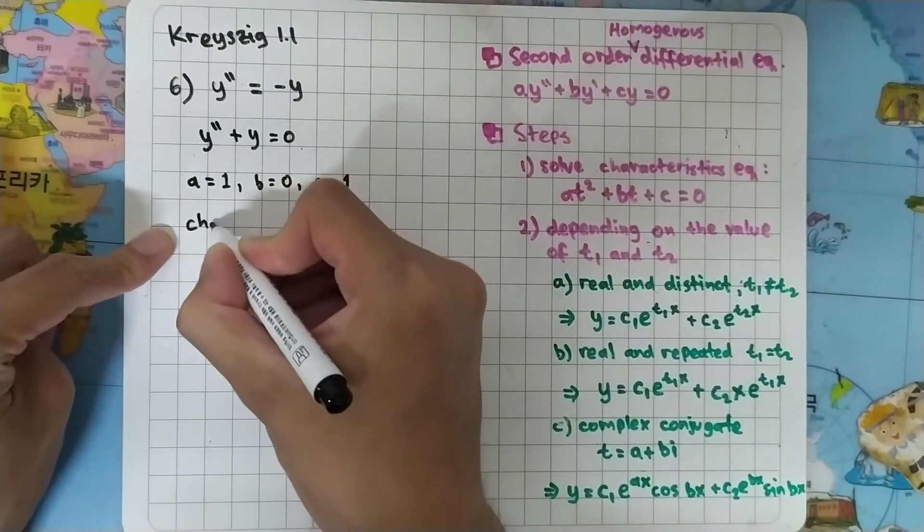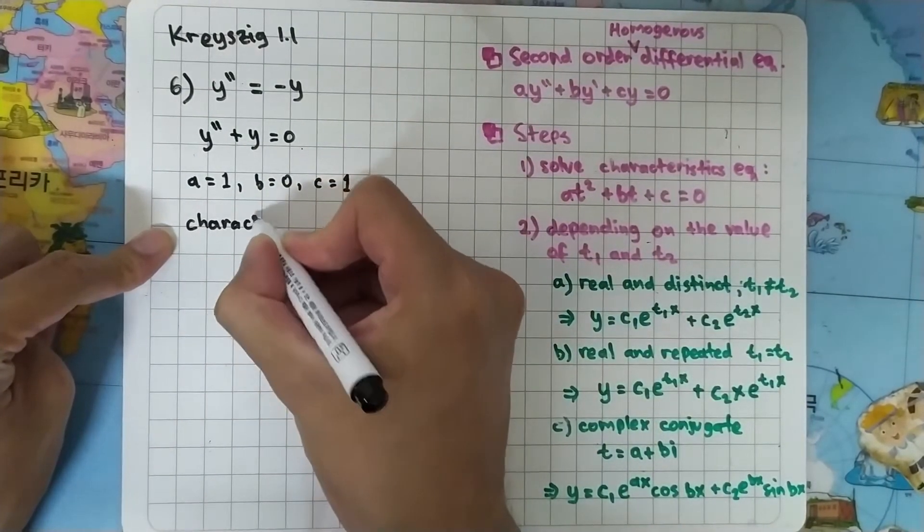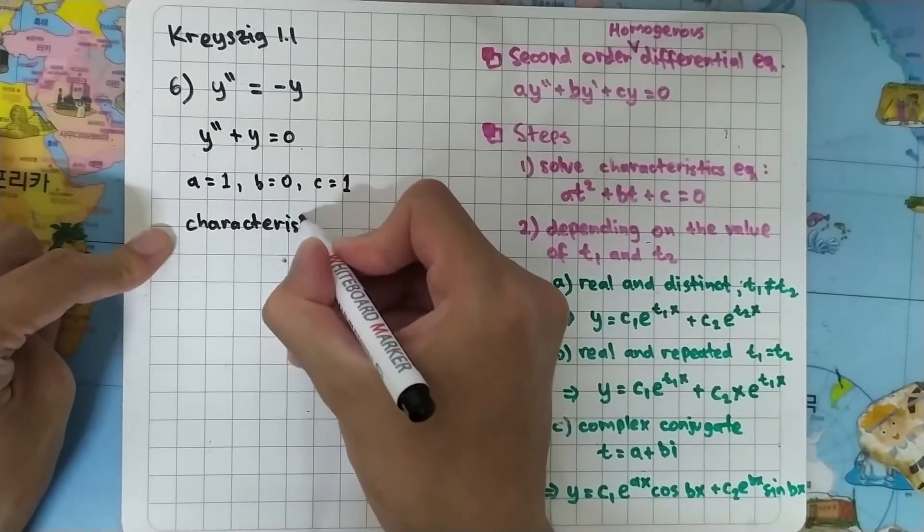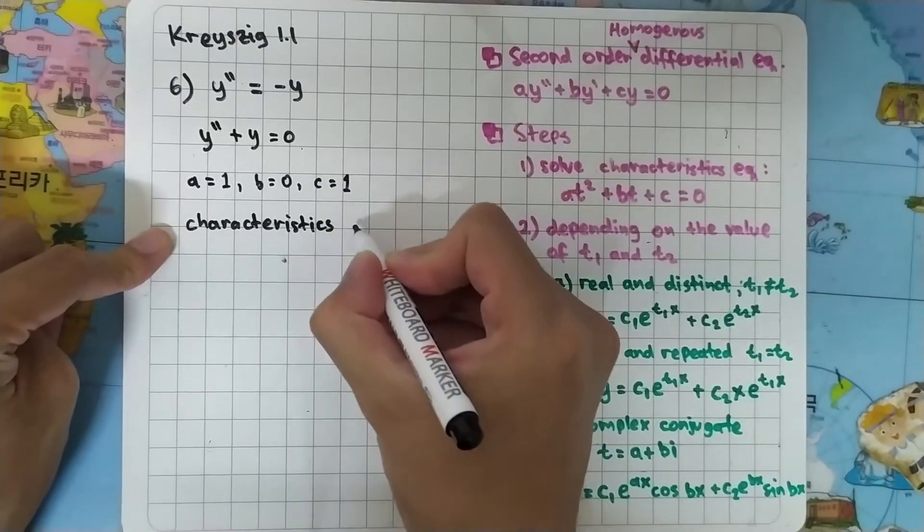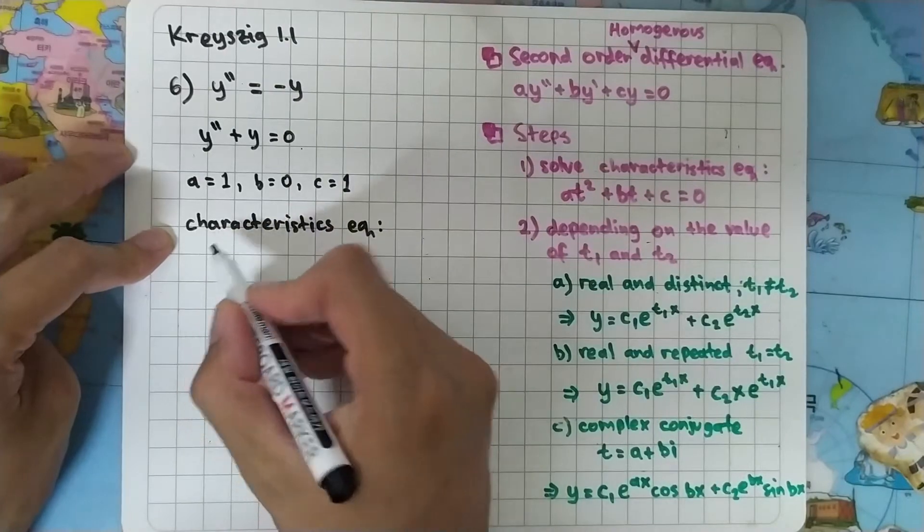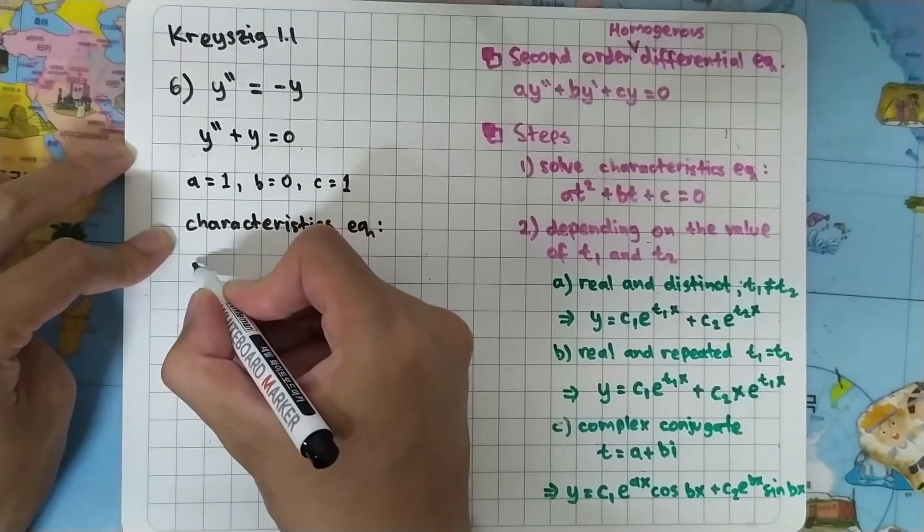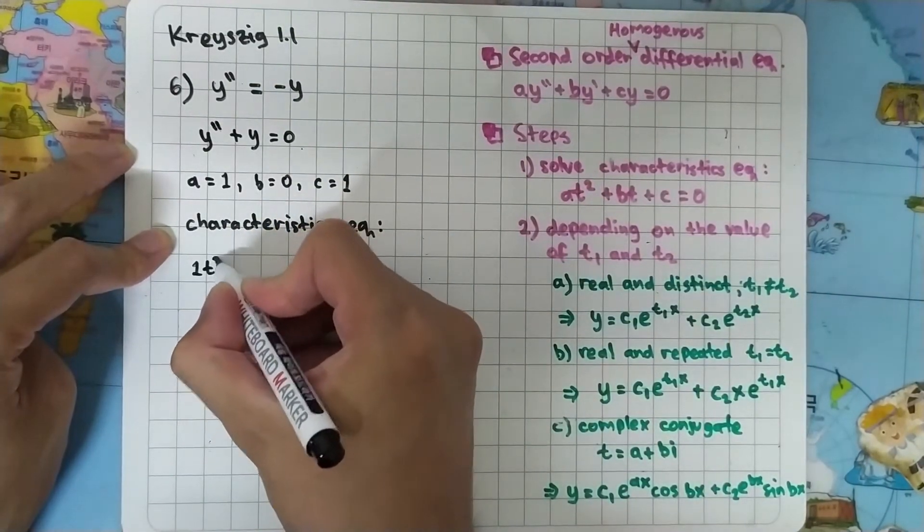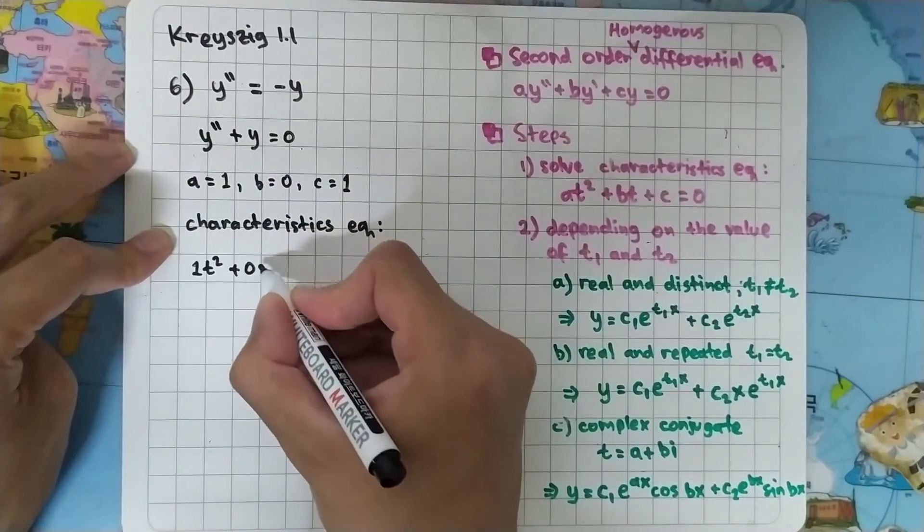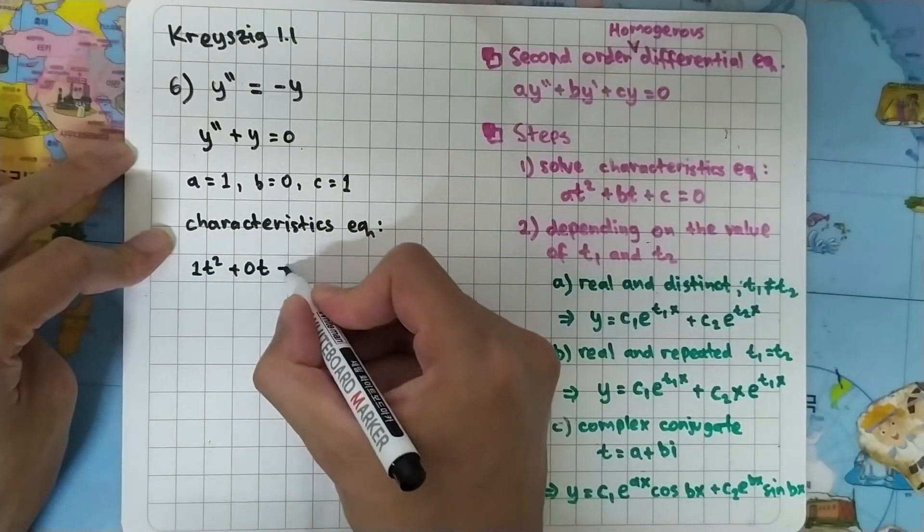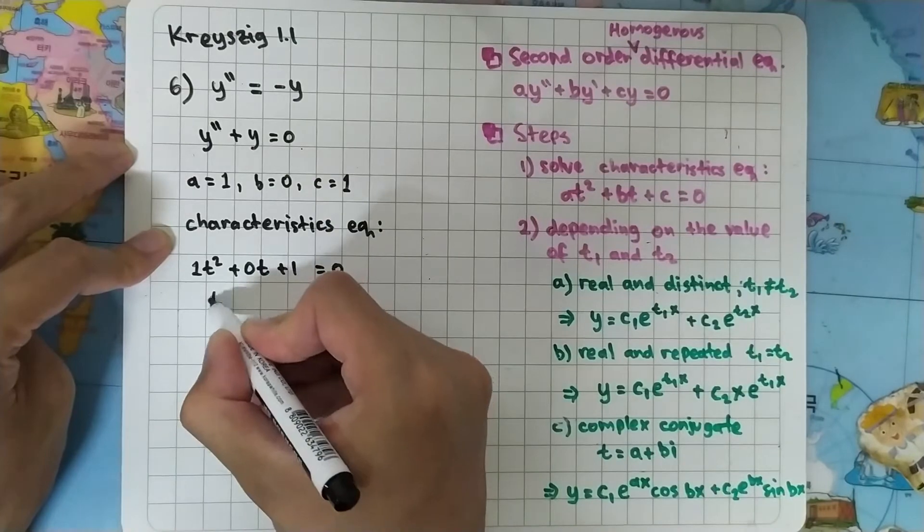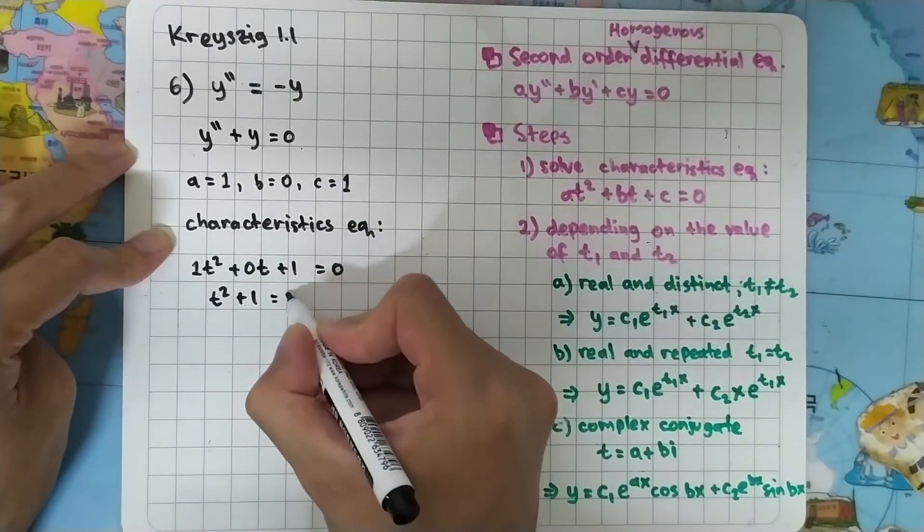We will have the characteristic equation: a is one, so T squared, plus b is zero times T, and c is one. So T squared plus one equals zero.